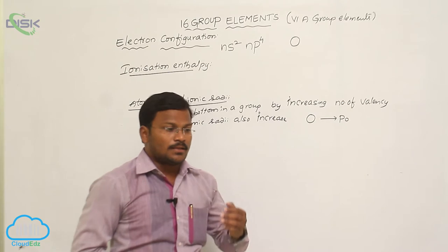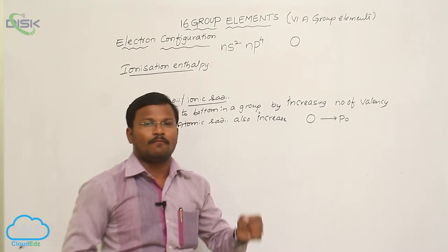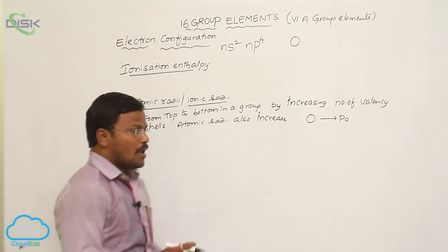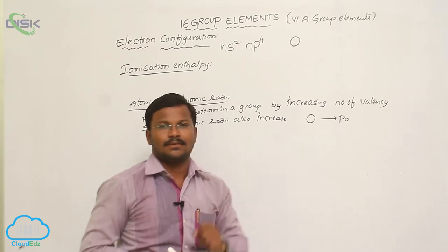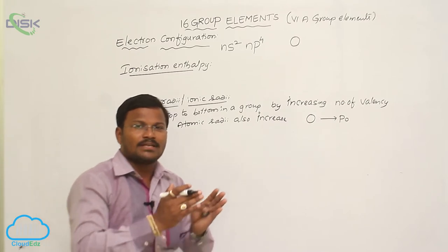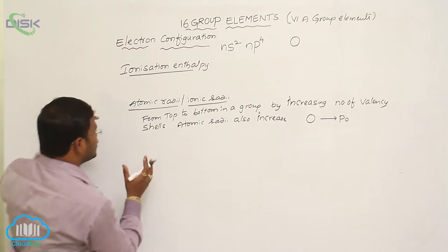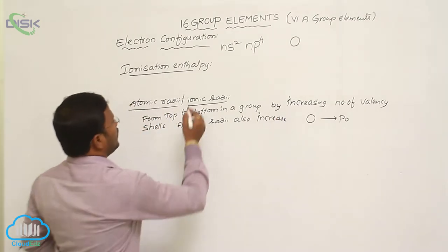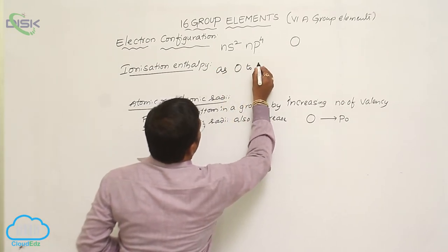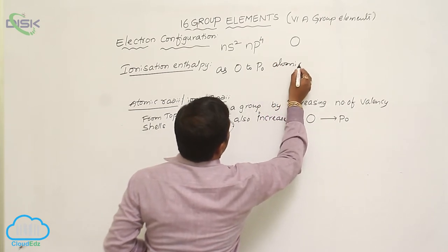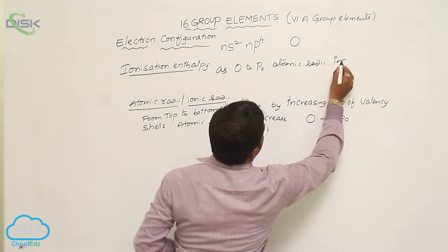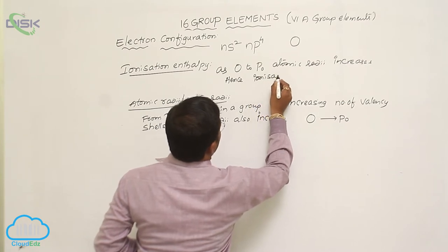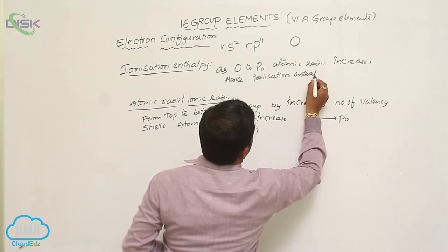What is ionization enthalpy? The amount of energy required to eliminate one electron from its outermost orbit or outer shell is called ionization enthalpy. Ionization enthalpies are more when atomic size is less, and less when atomic size is more. Based on atomic radii, as we go from oxygen to polonium, atomic radii increases, and hence ionization enthalpy decreases.